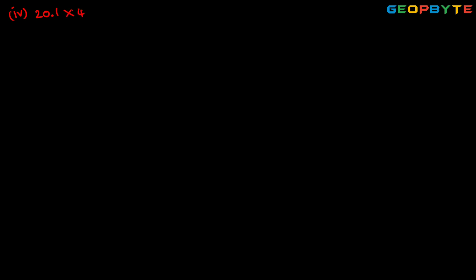Next, fourth one: 20.1 into 4. We need to eliminate the decimal point. Removing it, we get 201 into 4. Multiplying gives 804. There is one digit to the right of the decimal point in 20.1. So we move from right to left by one position — 4, then 0 is the second digit — and place the decimal point, giving 80.4.